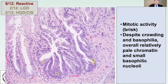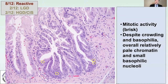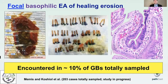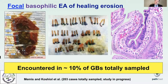Another key criterion: although these reactive areas appear basophilic, individual nuclei are actually hypochromatic with small, basophilic, eccentric nucleoli — unlike dysplasia, where nucleoli are significantly prominent and enlarged. It is almost like the difference between prostate basal cells and prostate adenocarcinoma. Focal basophilic atypia of healing erosion occurs in about 10% of gallbladders that are totally sampled, so this type of regenerative atypia is not uncommon in gallbladders removed for stones and other injury.